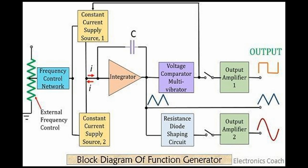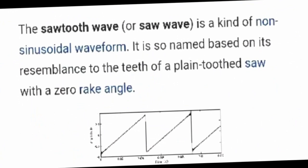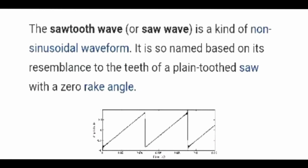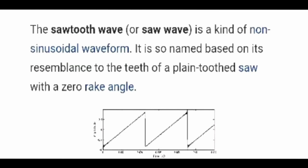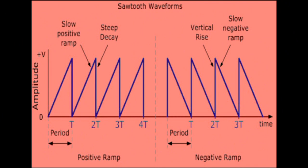This is the block diagram of the function generator and the output is produced. Another part of the CRO is the sawtooth wave. It is a kind of non-sinusoidal waveform, so named because of its resemblance to the teeth of a plane-tooth saw with a zero angle. This diagram shows a graph of the sawtooth waveforms: slow positive ramps, then steep decay, vertical rise, slow negative ramp.